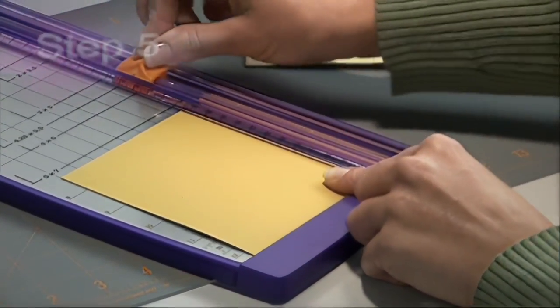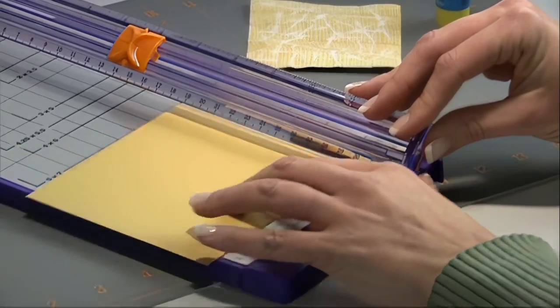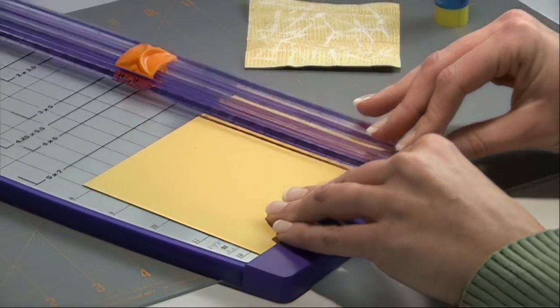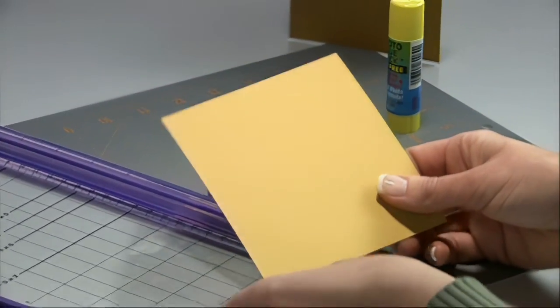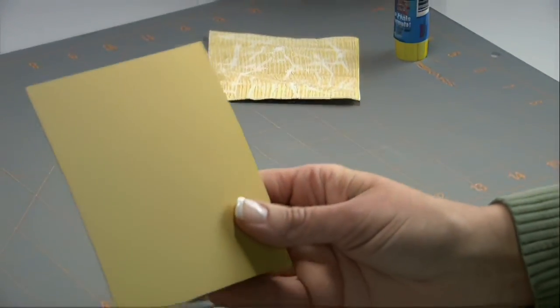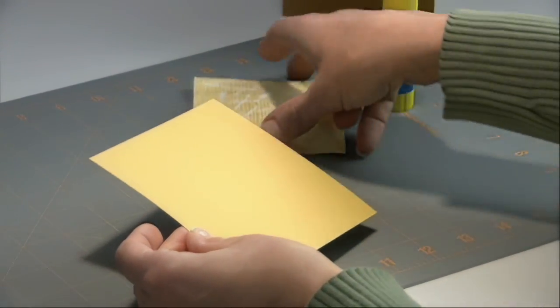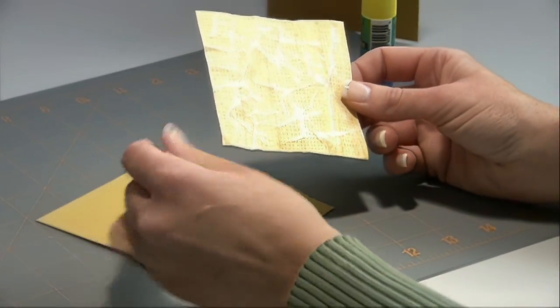Using a lighter colored tone of cardstock, we will measure and cut 4 1⁄4 inches by 4 1⁄4 inches. Putting our paper trimmer aside, it is now time to adhere our crumpled piece onto our cardstock.